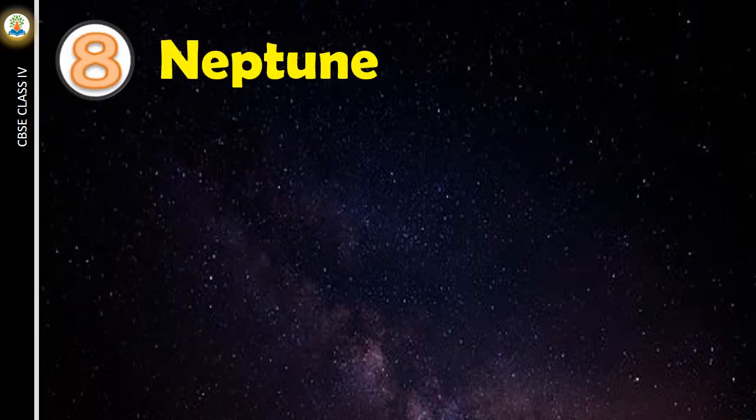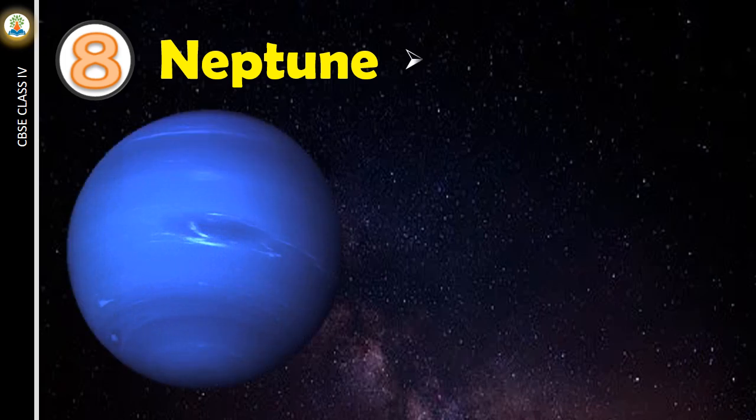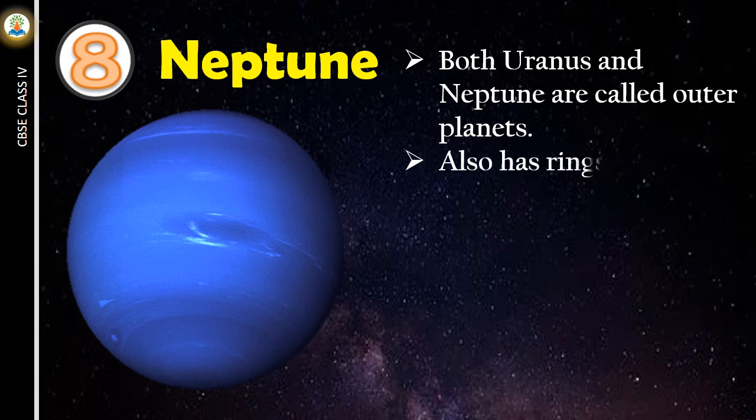Neptune is the eighth planet. Both Uranus and Neptune are called outer planets. It also has rings like Saturn.